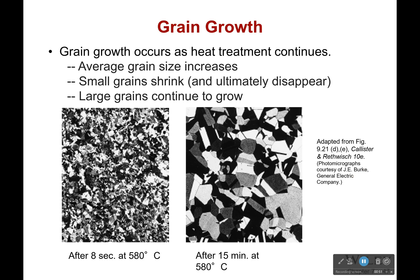With that in mind, we're going to have small grains that shrink and large grains that are going to continue to grow. So we're going to keep on growing until we have these very very large grains. This is after eight seconds at 580 degrees Celsius, and this is after 15 minutes. You can see that there's a lot less grains now because they've all joined together — joined together because we have that ability to move, and so the atoms are moving and forming more ordered structures.